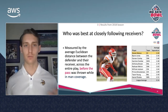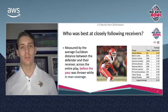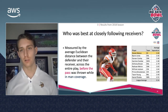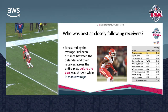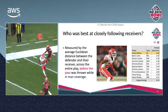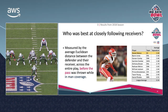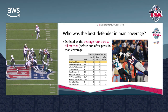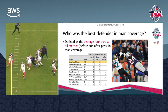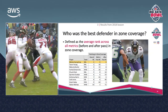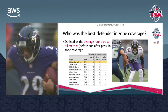Now that we have all these metrics, we can slice and dice them in many different ways depending on what question we're looking to answer. For example, on slide 12, if we wanted to know who's the best at closely following receivers, we could use our separation metric — Steven Nelson comes out on top among qualified defensive backs for the 2018 season. Or if we wanted to know who's the best defender in man coverage, we could average rank across all our metrics and find Stephon Gilmore of the Patriots on top. We could do the same for zone coverage, where we'd find Marlon Humphrey at the top — impressively, he's in the top five in both before-pass and after-pass metrics.